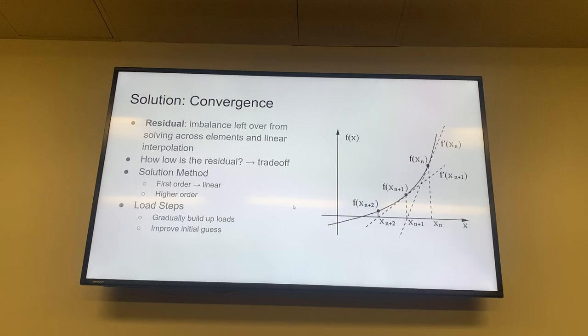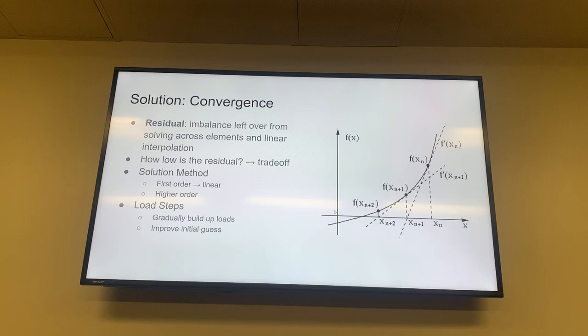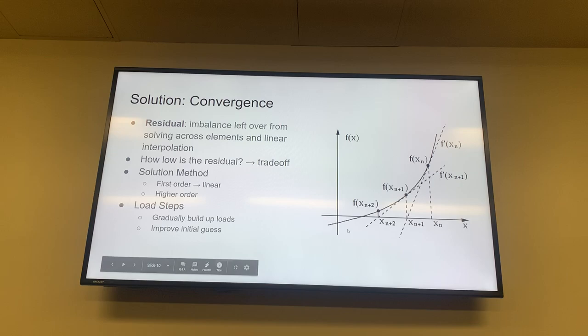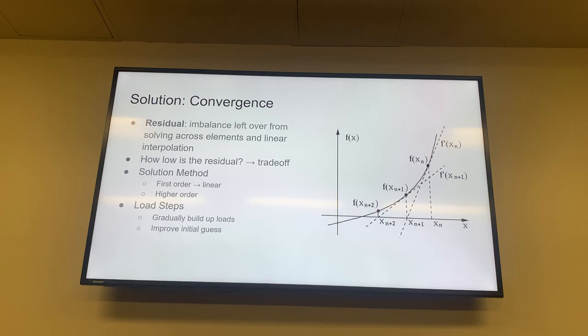Convergence: the residual is how much is left over as you're continuing to solve. This plot demonstrates the Newton-Raphson method, which is what computers like to use especially for higher order solving. Eventually it'll keep driving the solution closer and closer to the zero point where it intersects the x-axis, but it'll never exactly reach it — there's always a little bit of a residual. You tell the solver how big you want that residual to be to determine the accuracy of the solution you want.